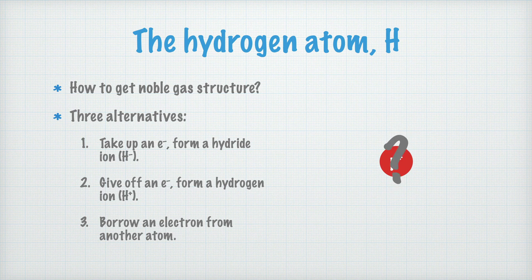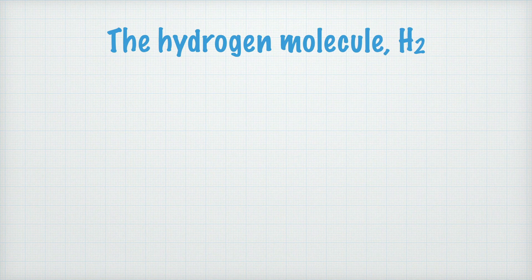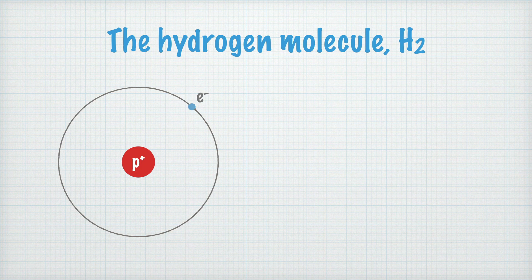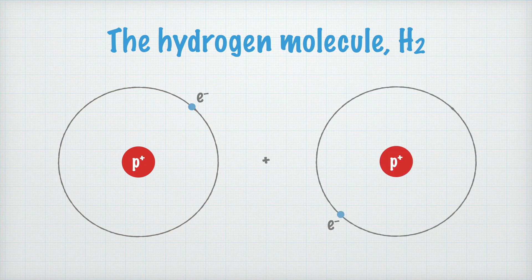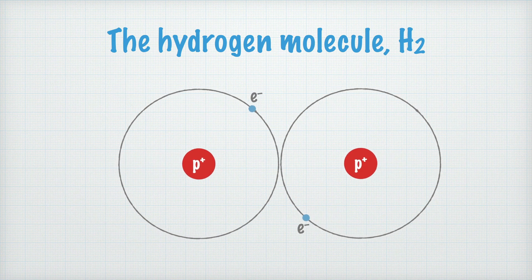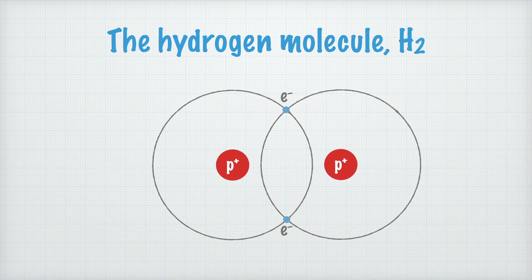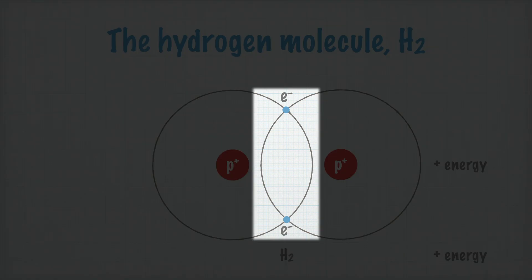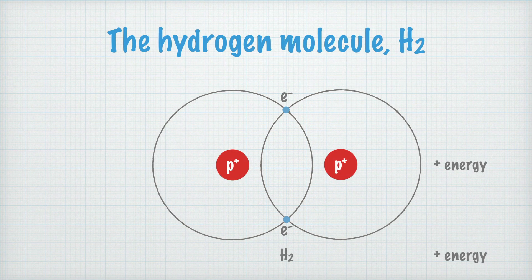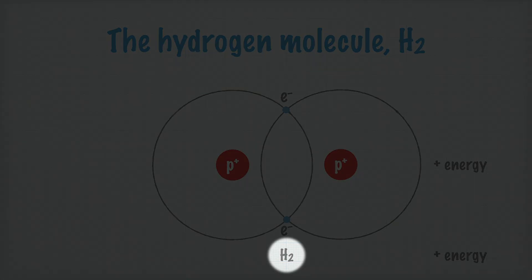Let me show you how a hydrogen molecule forms. Here we have a hydrogen atom — one proton and one electron — and here I add another hydrogen atom with its proton and electron. When they react with each other, they may borrow an electron from one another. They both join, and when bonds form, energy is always released. When the two atoms share an electron pair like this, they form a bond between them. Since the atoms share a pair of electrons, this type of bond is called an electron pair bond. Since the two atoms are now joined, we write them as a hydrogen molecule, H₂.